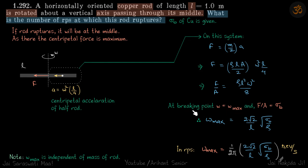Now as discussed, at breaking point, omega reaches maximum value and F by A reaches sigma B. So we'll put that F by A is sigma B, then omega max you will get as root of sigma B into 8 upon rho L square, that comes to be 2 root 2 root sigma B by rho by L.